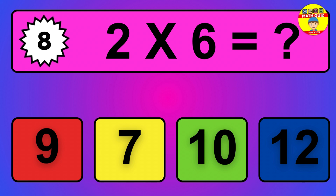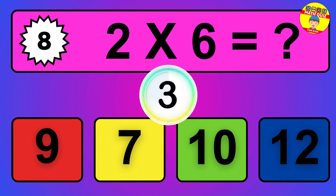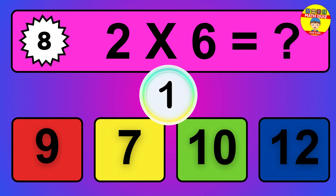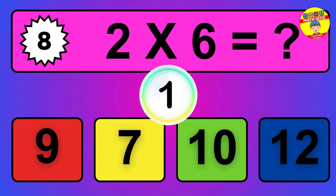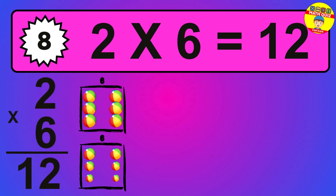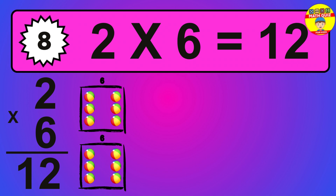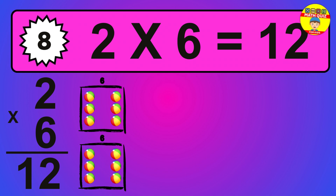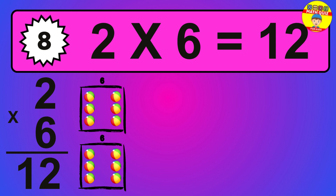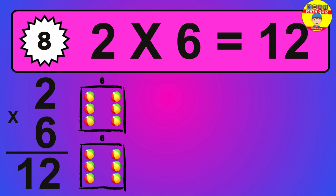Question 8. 2 times 6 equals what? So the answer is 2 times 6 is 12. To calculate, we have 2 groups with 6 balls each one. So how many balls do we have? 12 balls.